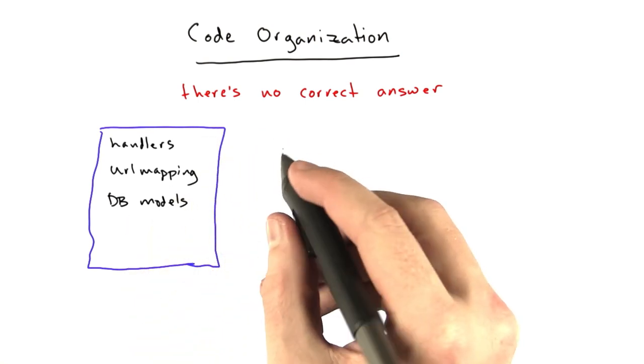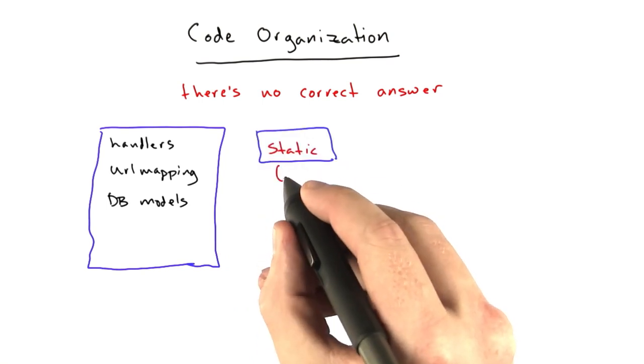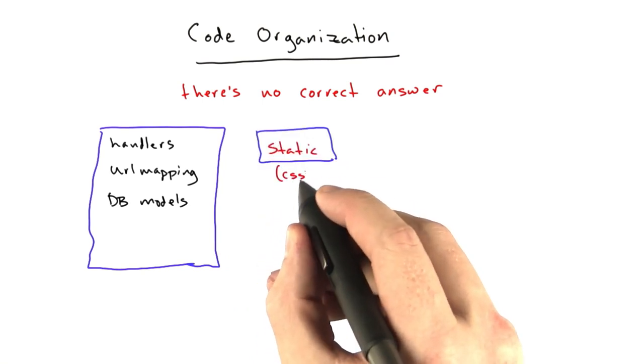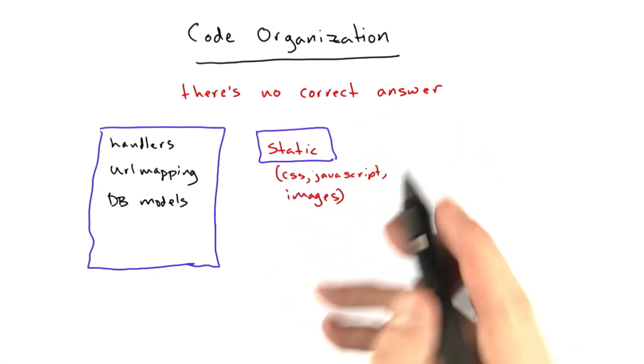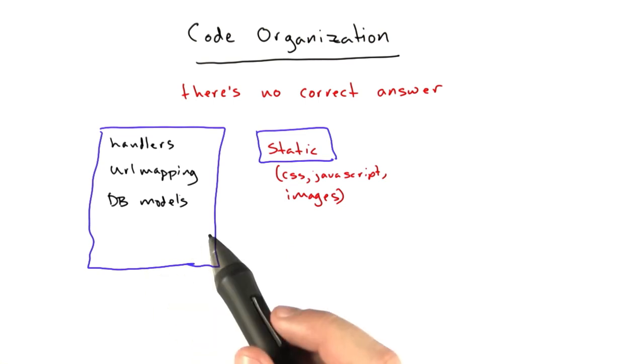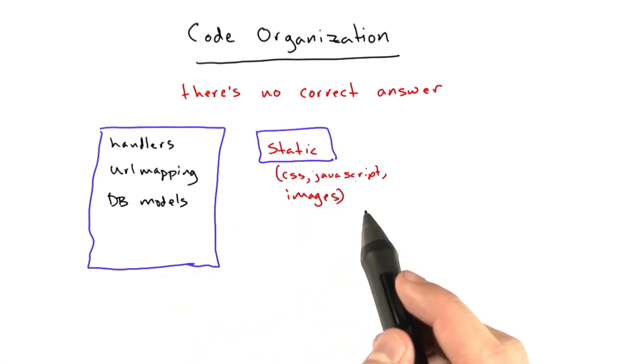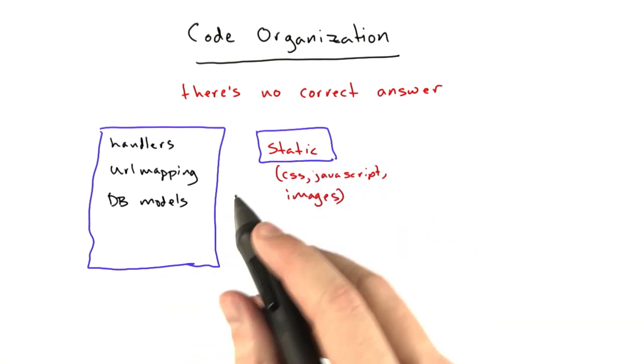Then almost immediately I have separate files for static content. Things like CSS, JavaScript. We haven't done any JavaScript in this class really. Images, I store separately. You could encode them into your file but that doesn't make sense. You just store them separately. Generally, you serve them separately as well. App Engine makes it easy to do that.